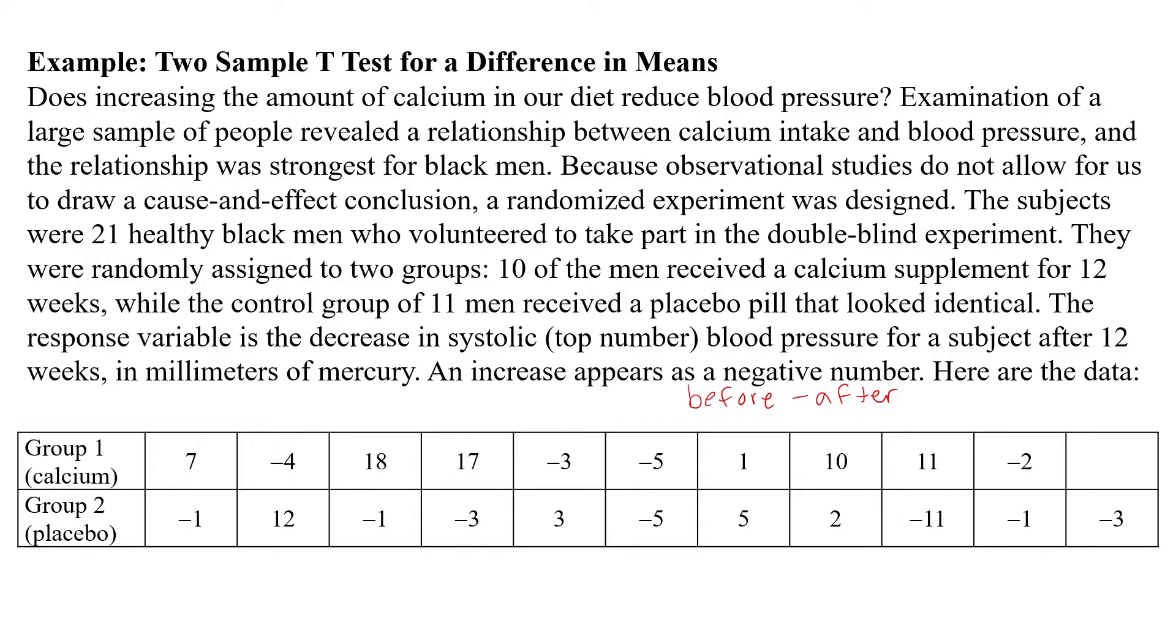So that means they looked at before minus after when they measured the response. So they took the person's before blood pressure, which is the top number, the systolic one, and then the after. So if their before was less than the after, it ends up being a negative number. But what we would like to see with the calcium supplement is that the before was larger than the after, because that would imply that the calcium helped decrease blood pressure if that number was positive. So that's what we're looking at here, and that's going to be important when we set up our hypotheses.